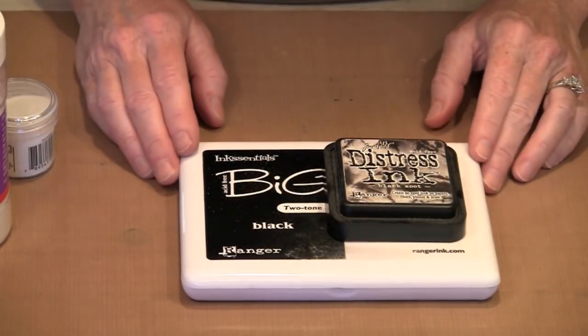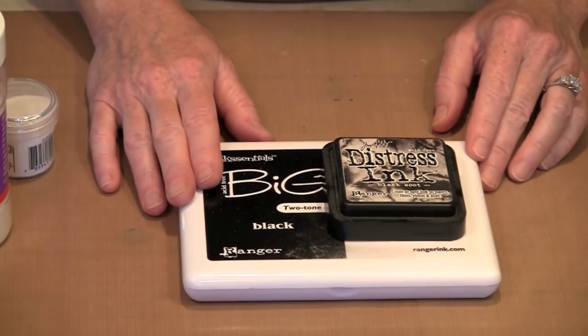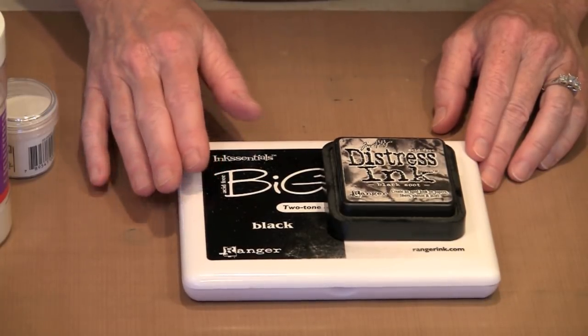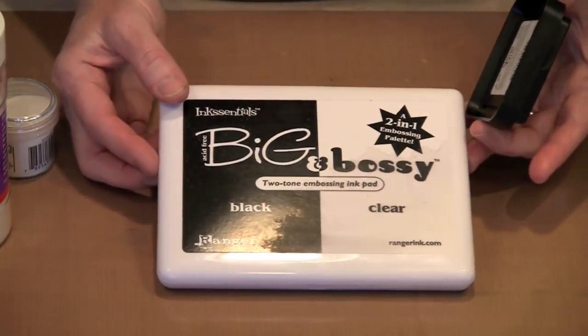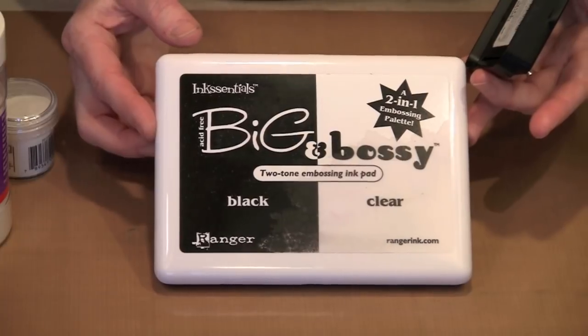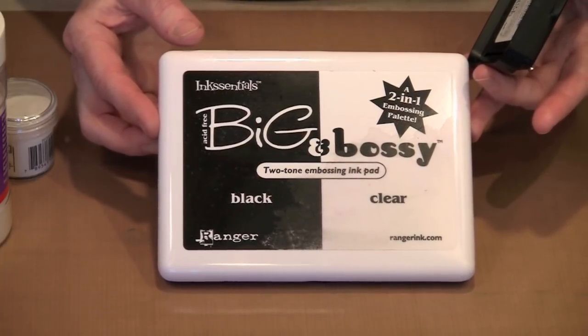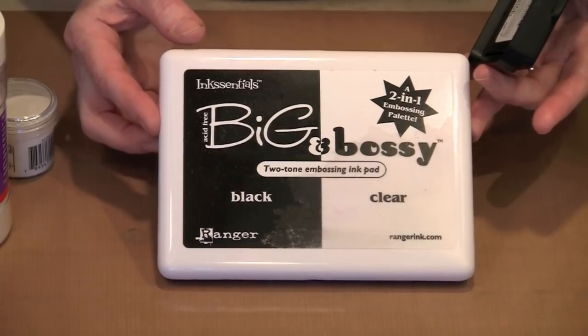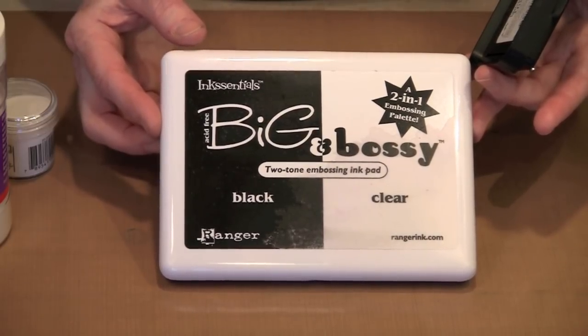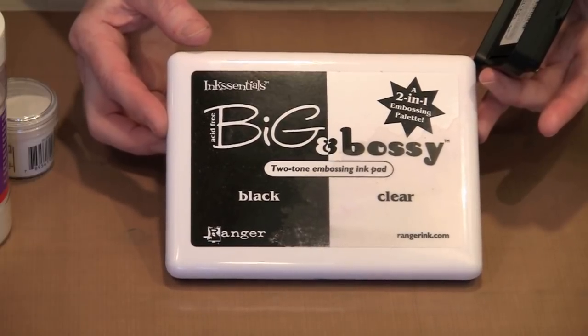In order to get the embossing powder to adhere to a surface, we need some kind of embossing ink. And for today we're going to talk about three different kinds of inks. This is a big embossing pad that Ranger makes that has both black and white thick embossing ink in it. And the reason that it's thick is that it's made to hold the granules in place and it's also made to stay wet longer to allow you time to stamp your image and then sprinkle the embossing powder on.